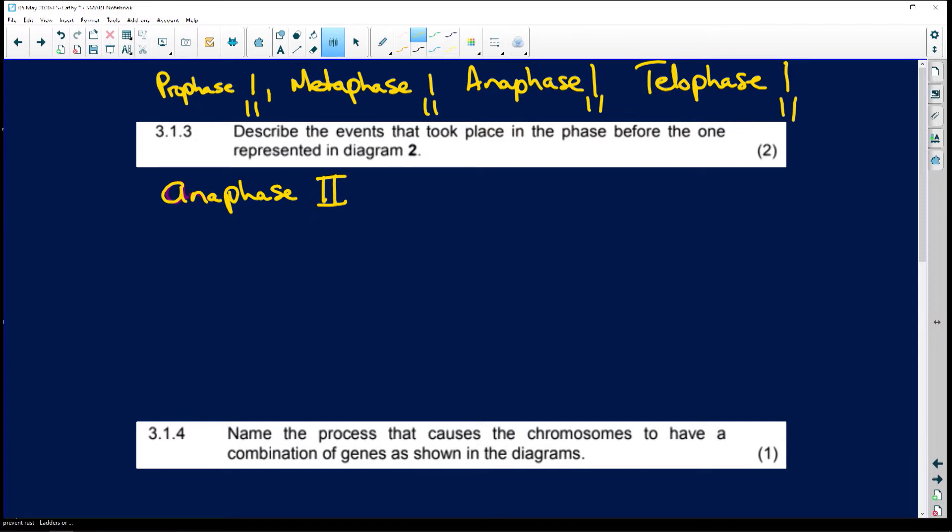How do you identify? Prophase one, you'll generally see crossing over. Prophase two, no crossing over. And your chromosomes are sort of next to each other. But your chromosome pairs are around. In prophase two, you're going to have single chromosomes just all over the show.